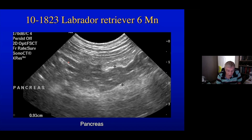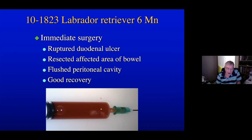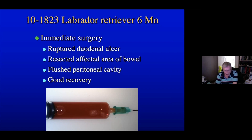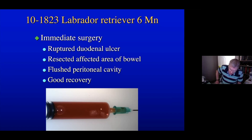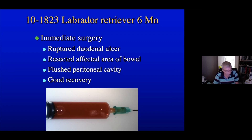Pancreatitis could cause a duodenal ulcer, or the duodenal ulcer could have started causing pancreatitis. The fluid we obtained was very turbid and quite bloodstained — you can't see clearly through it. It contained active white cells with intracellular bacteria, which always means peritonitis and requires immediate surgery. At surgery, there was indeed a ruptured duodenal ulcer. That area of bowel was resected, the peritoneal cavity was flushed, and the dog made a very good recovery. It had been on non-steroidal anti-inflammatories, which probably didn't help — or may have actually caused the ulceration within the duodenum.